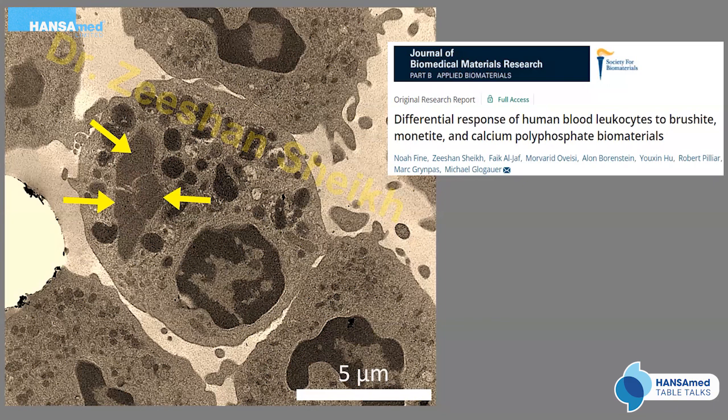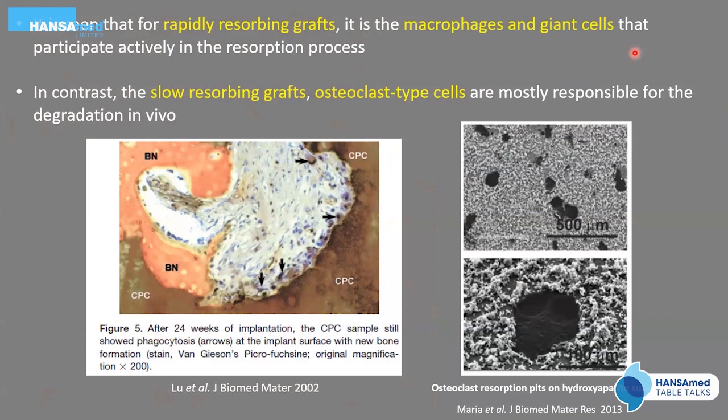For rapidly resorbing materials, macrophages and giant cells actively participate in the early resorption process. In contrast, for slowly resorbing grafts, osteoclast-type cells are mostly responsible for degradation once implanted.